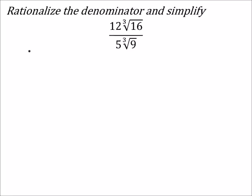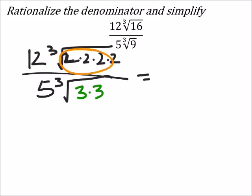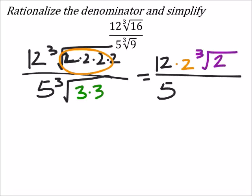So, on this problem, we've got 12 times the cube root of 16. I'm going to make it 4 twos, which will give me a 2 to factor out of that. And 9 is going to split up into 3 and 3. So, this equals... we can pull out a triple of these 2s. So, this becomes 12 times 2 times the cube root of 2, all over 5 times the cube root of 3 times 3.